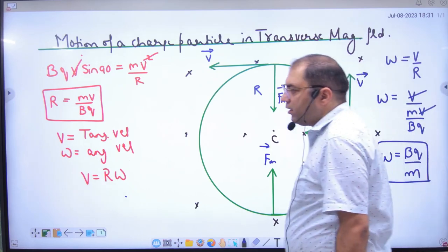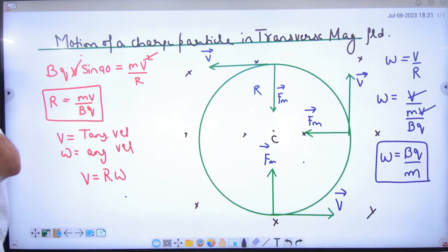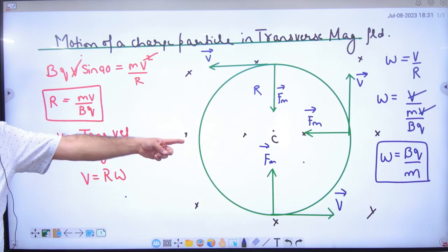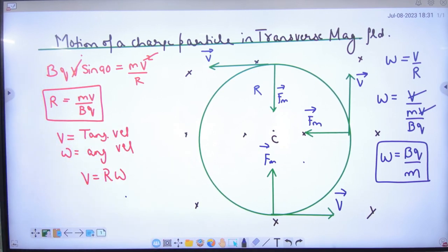So second formula, note please. When this question comes, then omega will ask angular velocity. So you note the formula: BQ divided by M. So the first formula is radius. The second formula is omega.